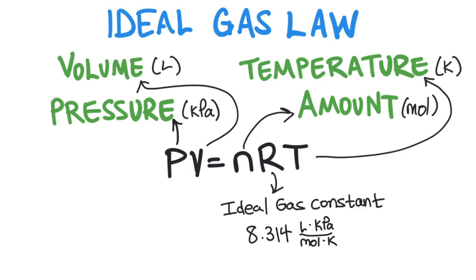In this equation, P stands for pressure, usually in units of kilopascals. V stands for volume, usually in units of liters. N stands for the amount in moles. T stands for temperature, usually in units of Kelvin.